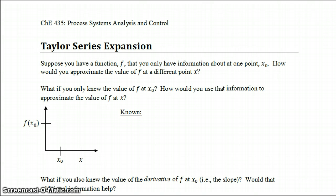If we only knew the value of the function f at x0, how would we use that information to approximate the value of f at x? Our known in this case is just f of x0. We know this point right here. If all we knew was that point, and we wanted to approximate the value of f at a different point x, the best guess that we could possibly have is that f of x is equal to f of x0.